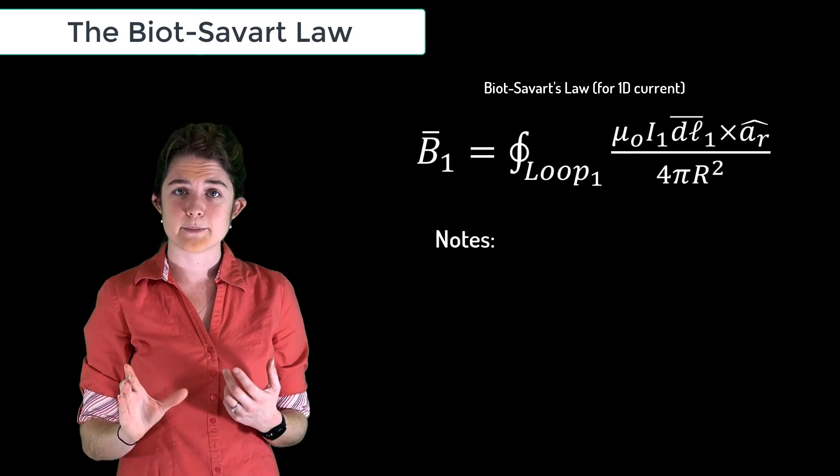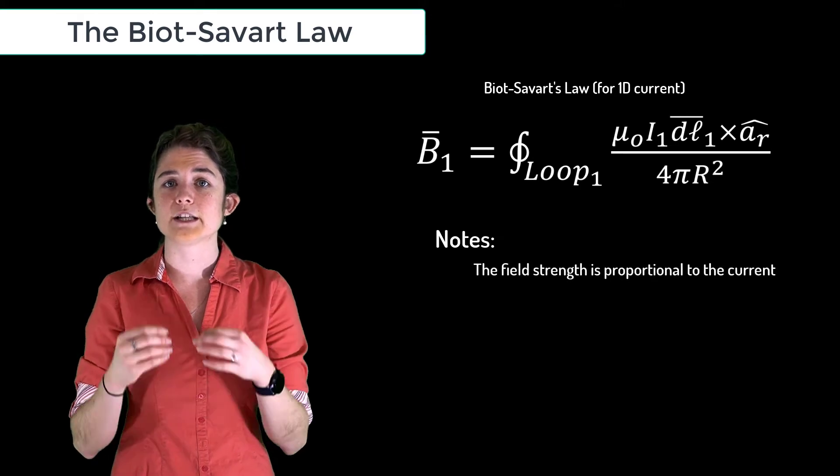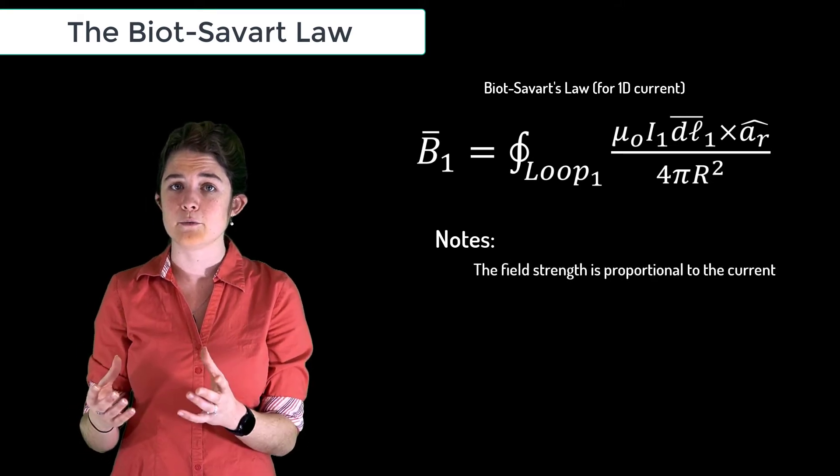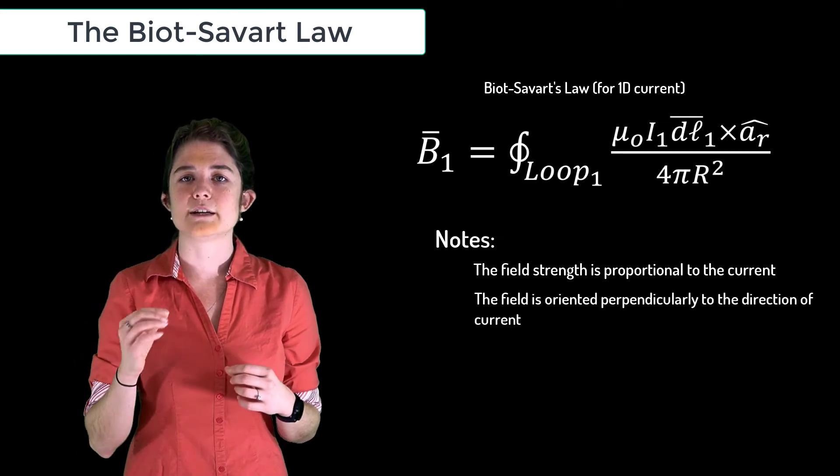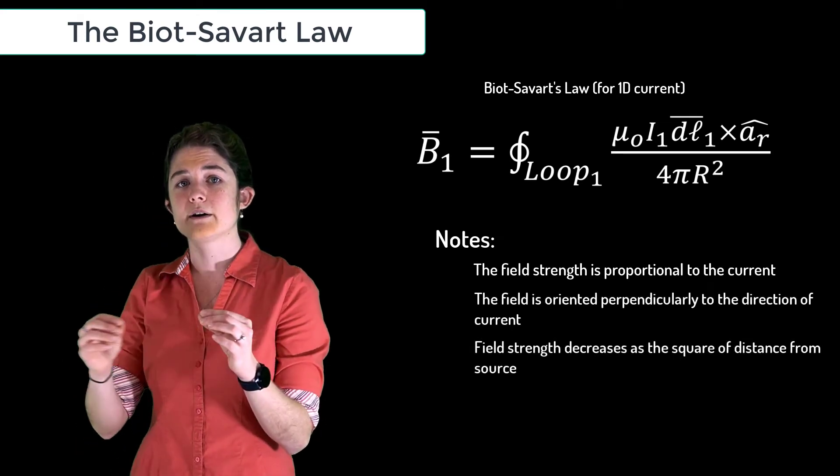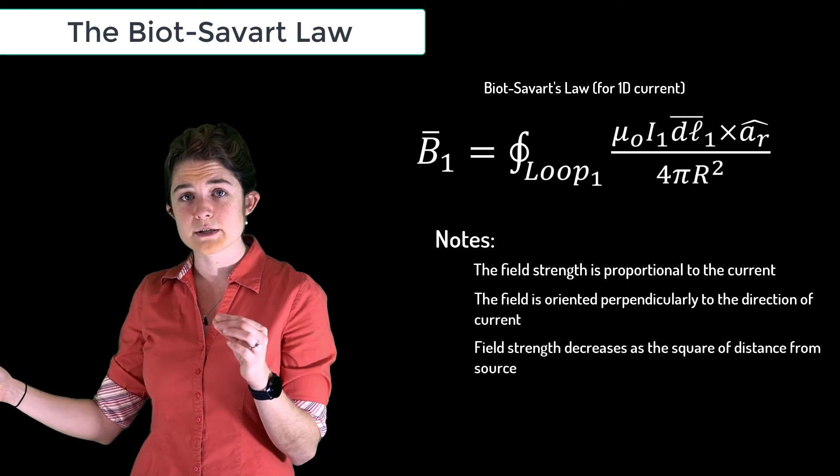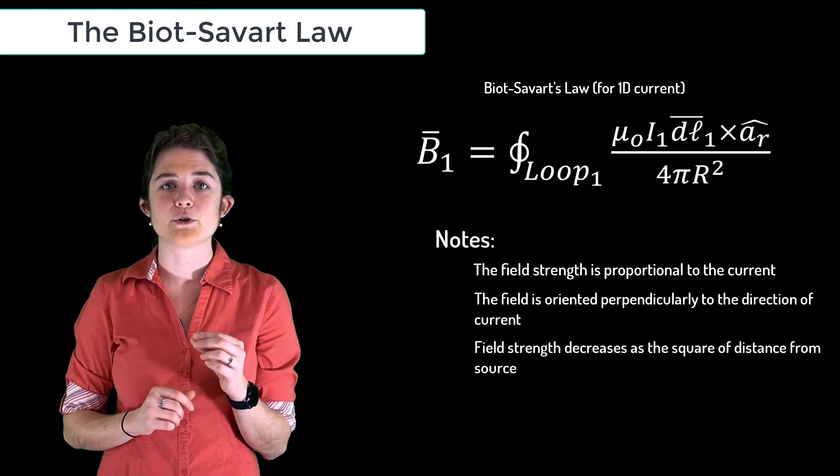The numerator says that the field is proportional to the current in the loop and oriented perpendicularly to the direction of current. The denominator says that the field grows weaker as you get farther away from the source, with a decay rate proportional to 1 over R squared.